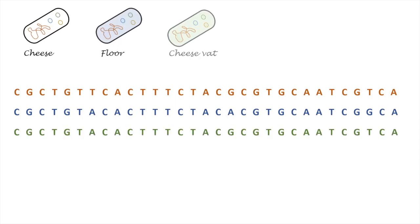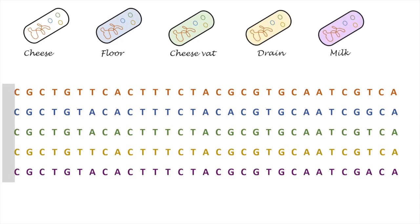Now the genomes of the isolates can be compared. Bacterial genomes are aligned and the number and position of SNPs can be identified. The lower the number of SNPs, the more likely the isolates have a recent common ancestor and are therefore clones of the same strain.